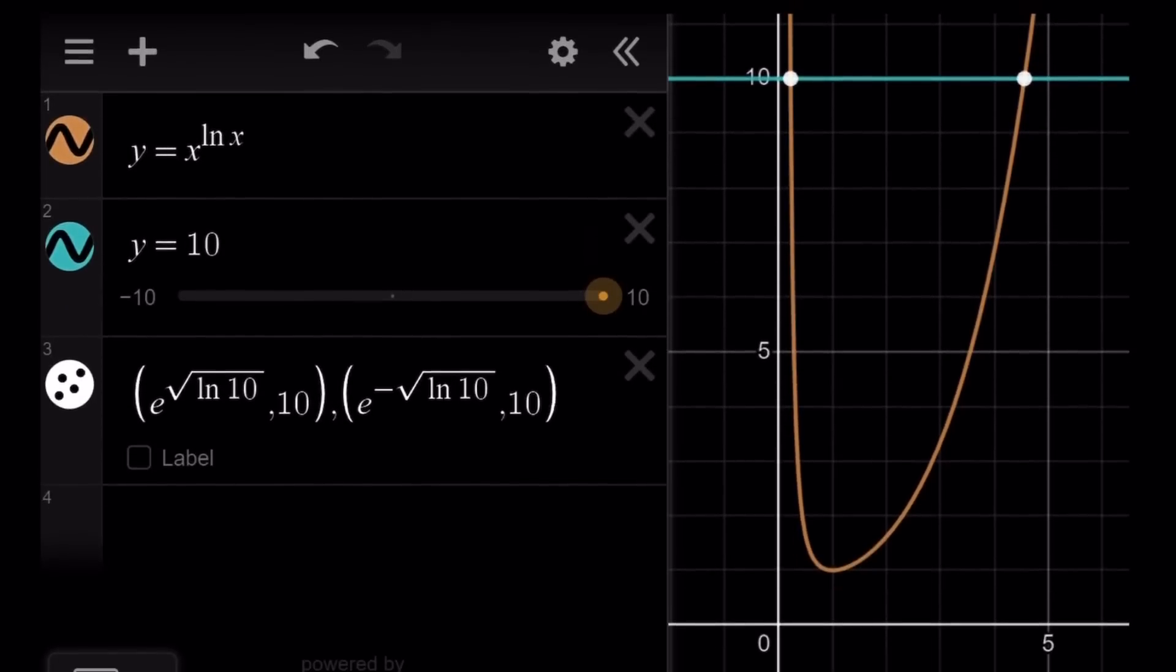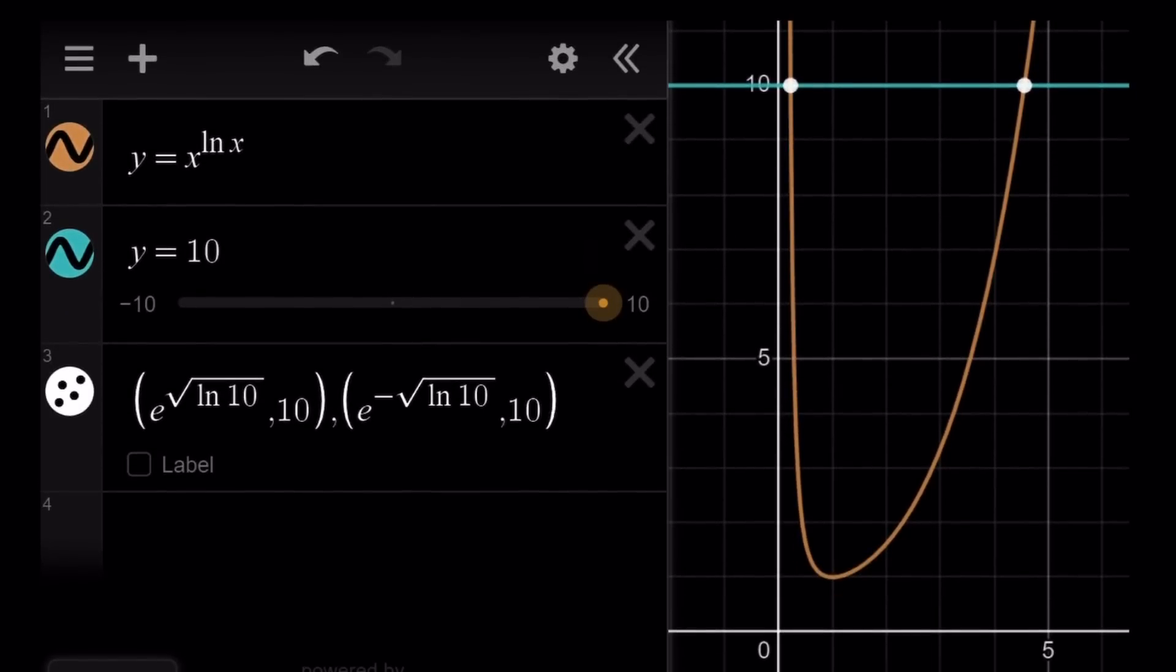Let's take a look at the graph real quick, and we'll finish up. Here's the graph of y equals x to the power ln x. Remember, we looked at this graph before. We've done quite a few problems on this function. Horizontal line y equals 10 intersects the graph at two points. And those points are given by these x coordinates, which are the solutions to our equation.